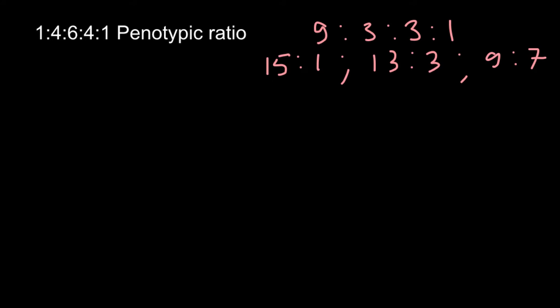We can get the maximum distribution of a trait if these two genes are both heterozygous. So gene A would be represented by two alleles, dominant and recessive, and gene B also by two alleles, dominant and recessive. This is going to be the genotype of one parent, and we cross it with another parent who is also heterozygous for both genes.